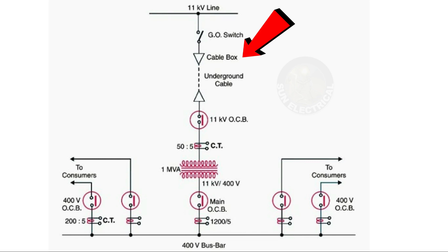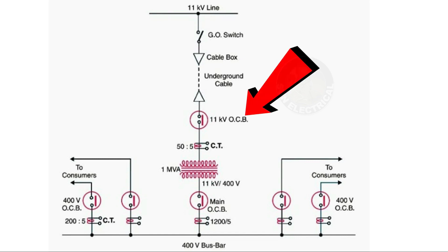Here we have a cable box — this is an underground cable. This is the overhead cable, which is a direct line, and this is the underground cable shown as a triangular shape. We use a circuit breaker here — specifically an OCB, meaning an oil circuit breaker.